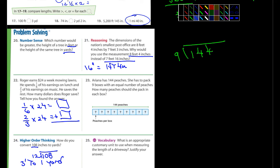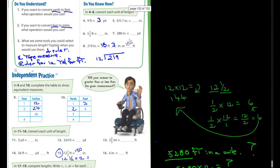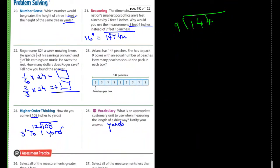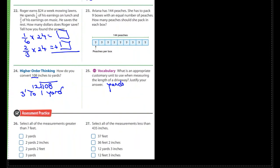And 25, the last one, well, not the last one, actually. It says, what is an appropriate customary unit to use when measuring the length of a driveway? Justify your answer. Well, would you use inches? I wouldn't. I would probably use yards. Why? Well, let's see here. An inch is much too small. A mile is much too big. You can put that in your own words, or you could use what I just said. I'd be fine with either one. 26 and 27, you guys can do those on your own. So, that's it.